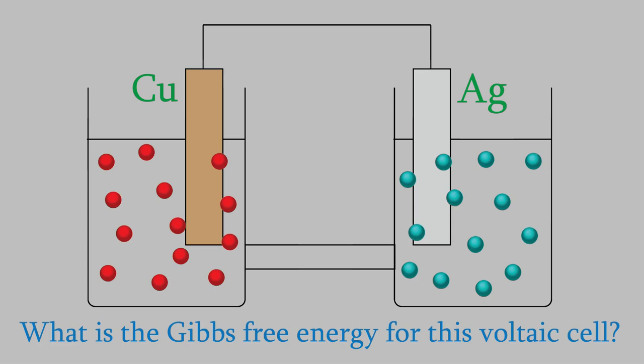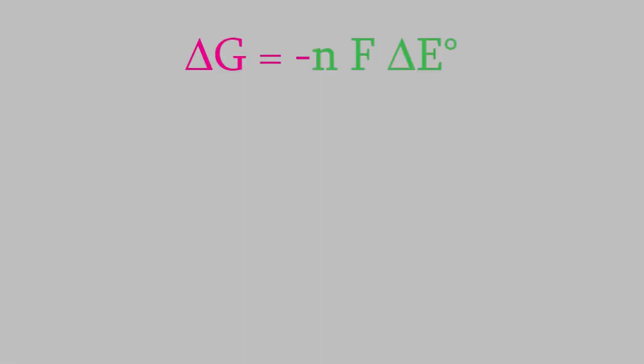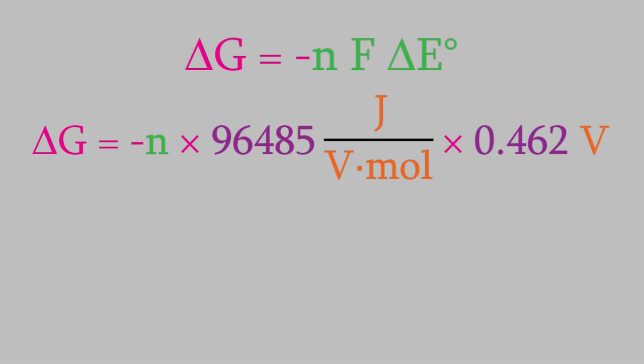We plug that into our equation, along with the Faraday constant. To get N, we have to look at the half-reactions for this voltaic cell.